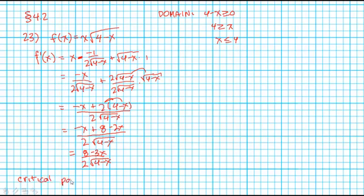So we're at critical points at x is equal to 4, but also where the numerator is equal to 0, and that's going to be at x is equal to 8 thirds.